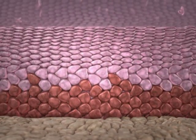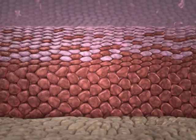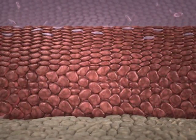CIN is divided into three grades, based on the proportion of the epithelial thickness occupied by the most morphologically abnormal basaloid cells.